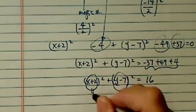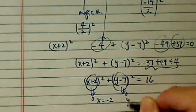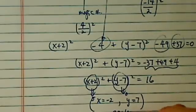Next step, we're going to circle this. When I set this equal to 0, x equals minus 2, set this equal to 0, y equals 7, and this becomes my center of the circle.